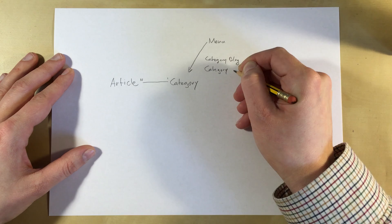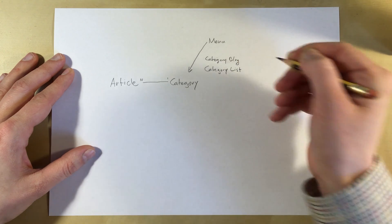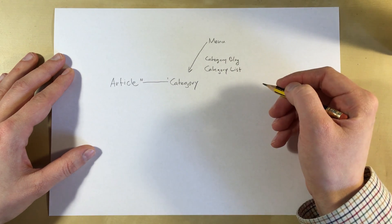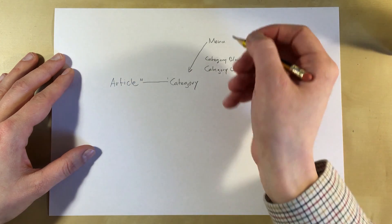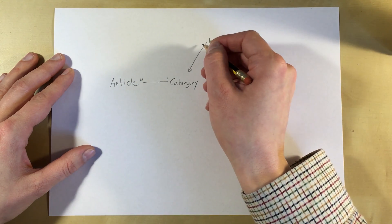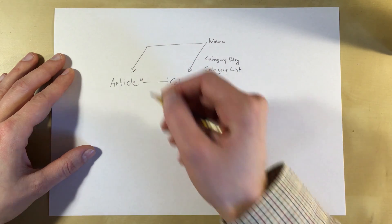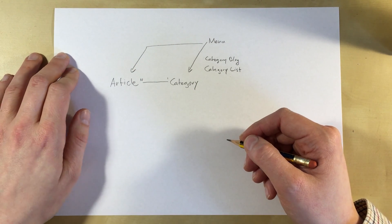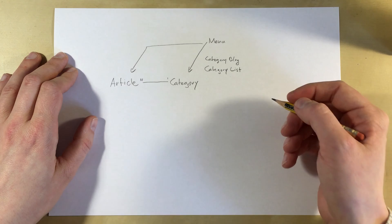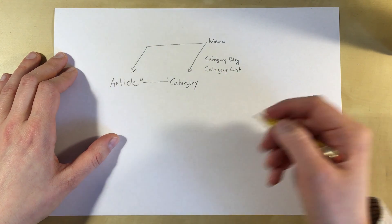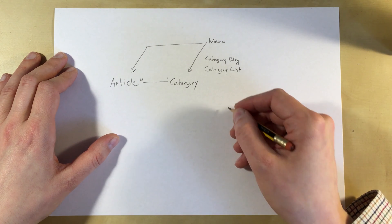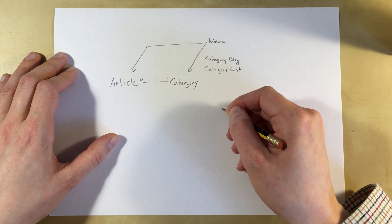A category list. But we don't have to use those menu items linked to categories. We could also have a menu item that links directly to an article if we wanted to, but usually it makes sense to link to a specific category.